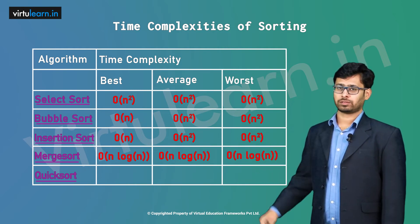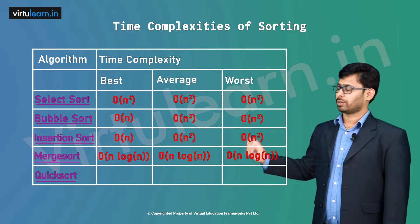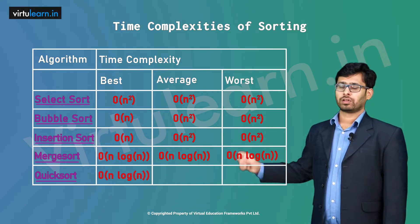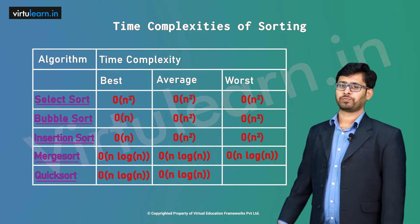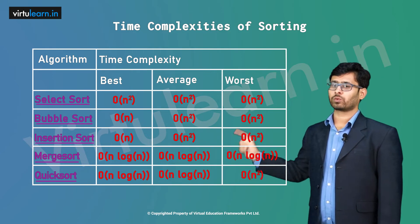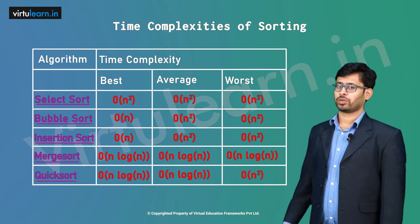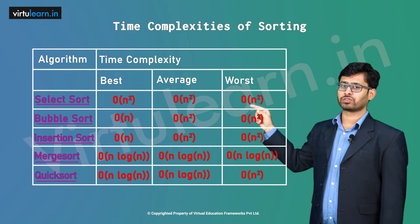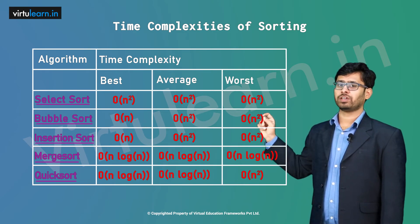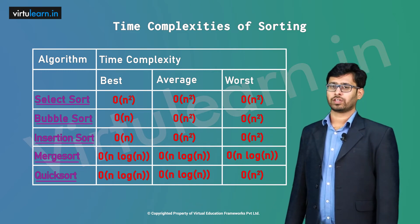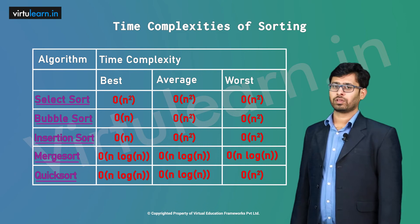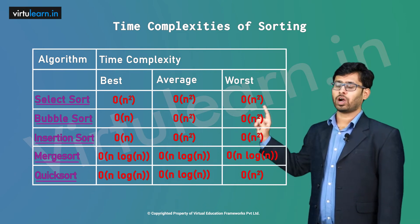For quick sort, the best case is O(n log n), the average case is O(n log n), and the worst case is O(n²). If you watch closely, between merge sort and quick sort only the worst case time complexity is different — in merge sort it is O(n log n), whereas in quick sort it is O(n²).